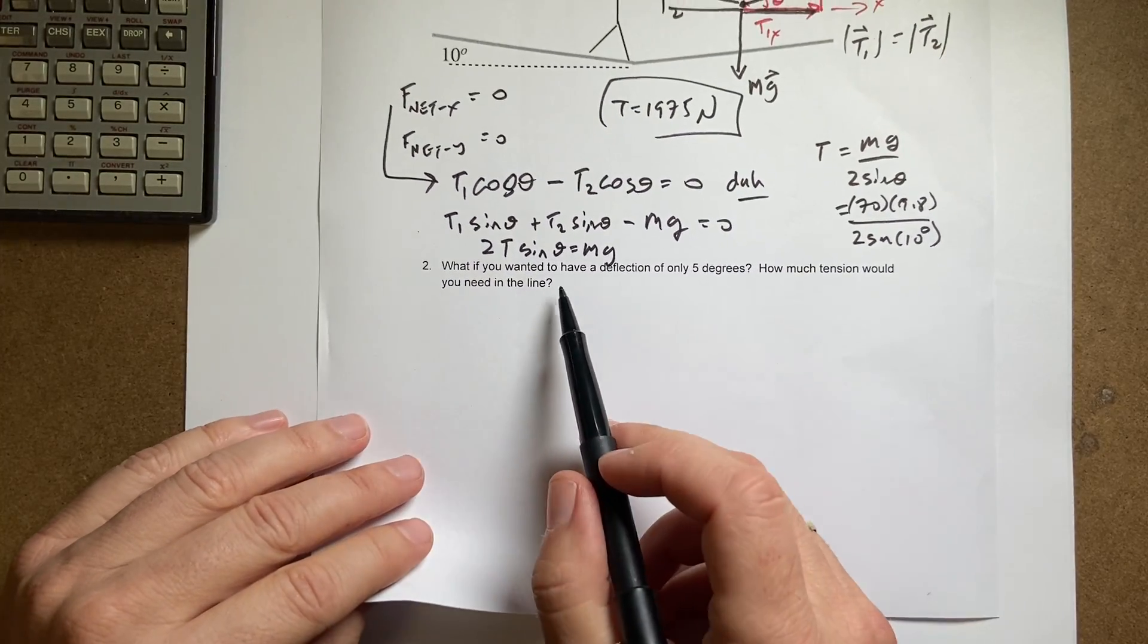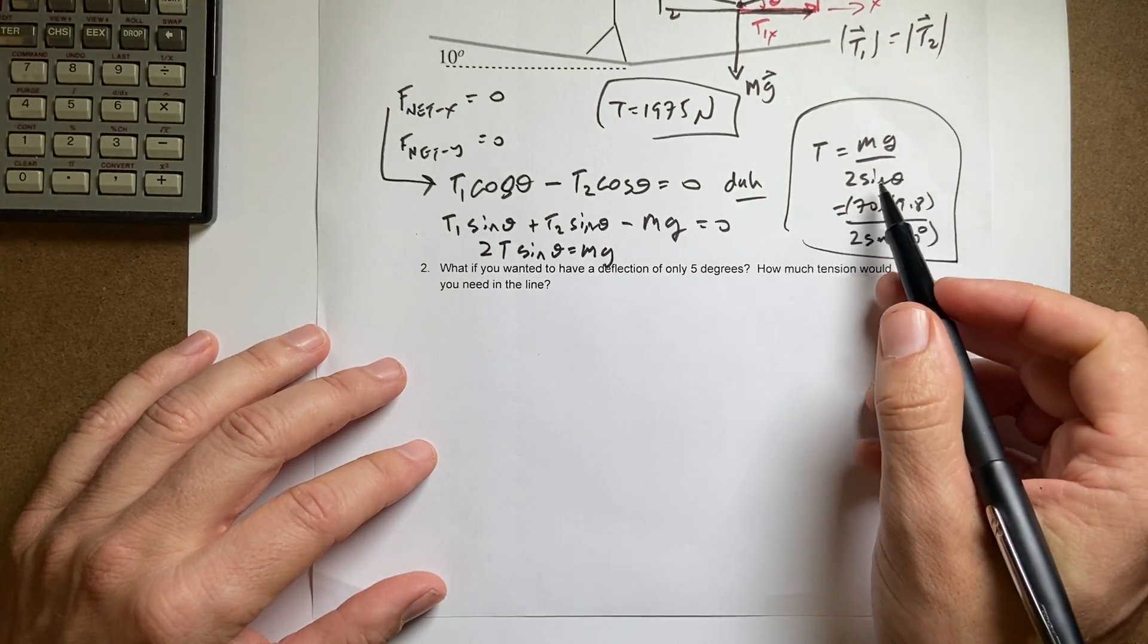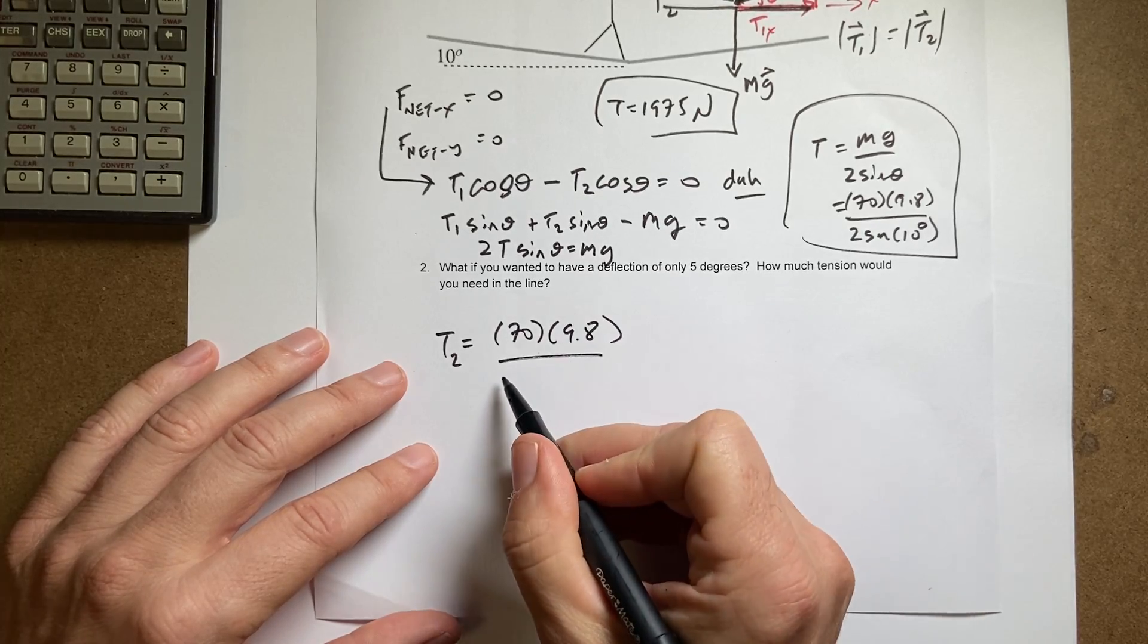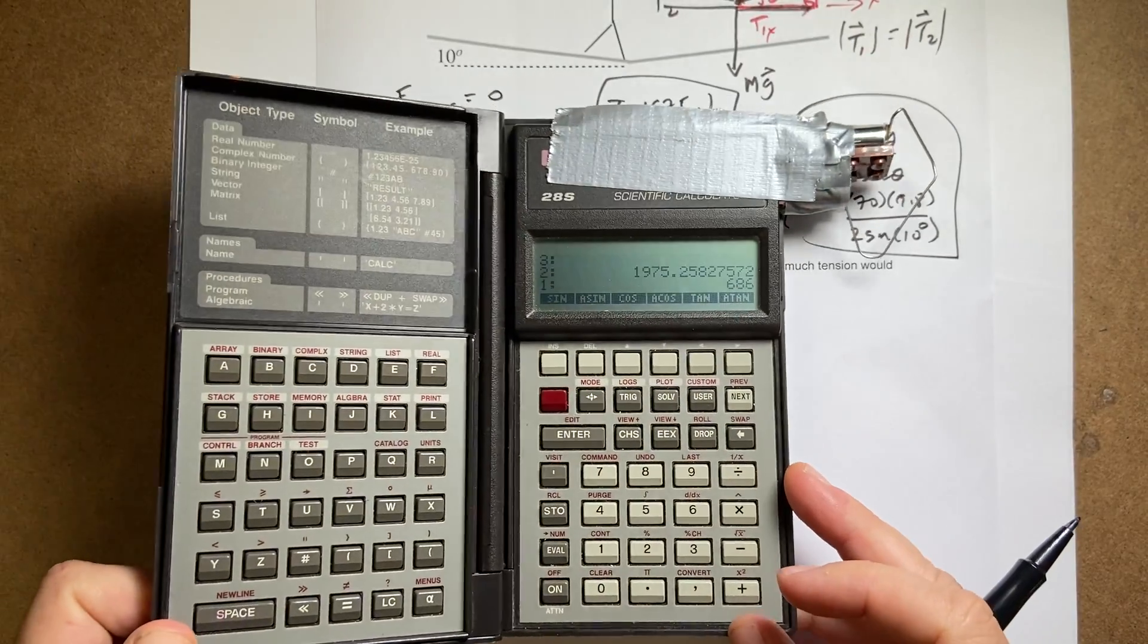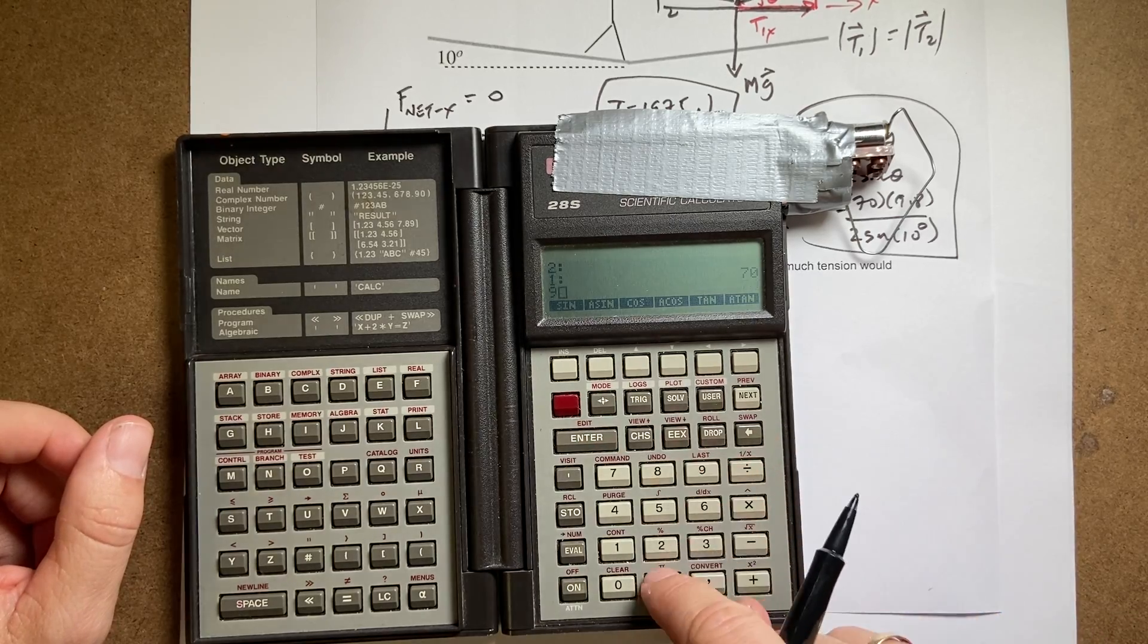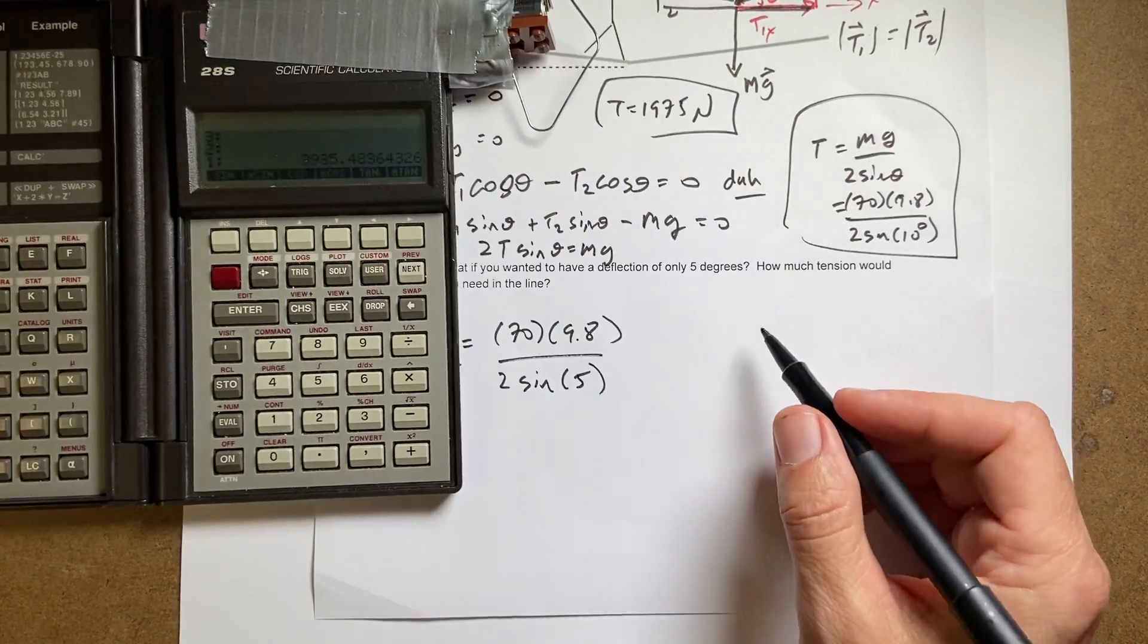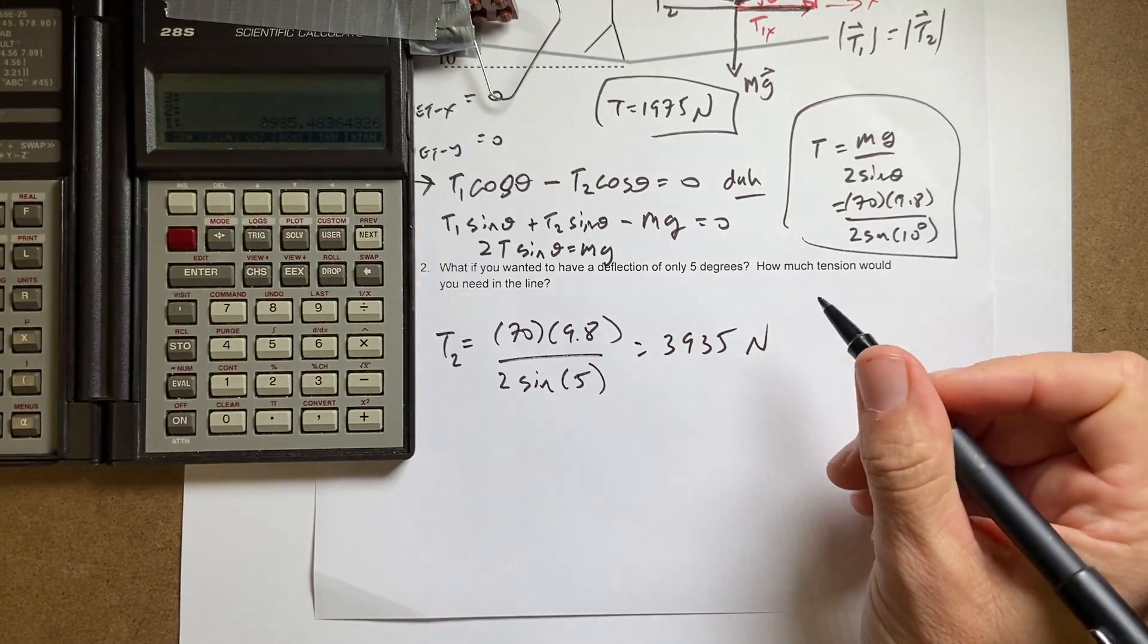Okay. What if I wanted to have a deflection of only 5 degrees? How much tension would you need? Well, I've already done this problem. So that's the nice thing about doing it without putting in all the numbers. So now I can just say T2 is 70 times 9.8, I left off my units, 2 times the sine of 5 degrees. So it's half the angle. Let's just see what happens. So I have, I can drop this stuff. 70, 9.8 times 2 divided by 5 sine divided by, 3935 newtons.